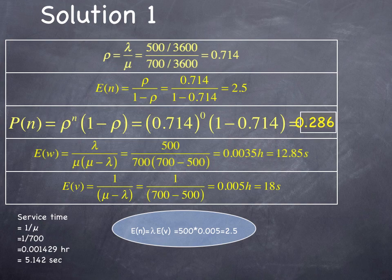so 1 over 700 vehicles per hour is 0.1429 hours, or 5.142 seconds. 5.142 seconds plus 12.85 seconds equals 18 seconds. So to check you did these equations correctly.